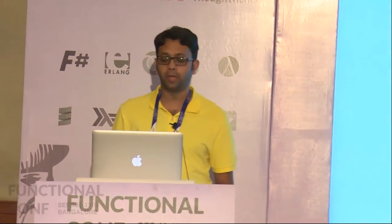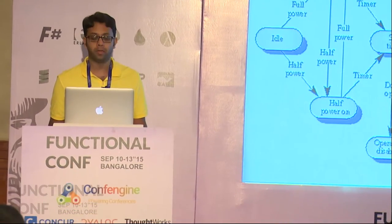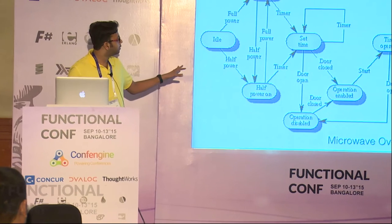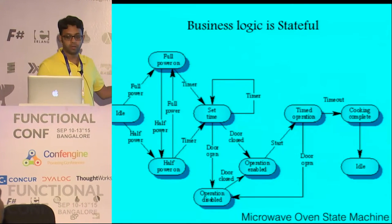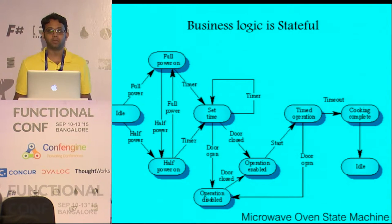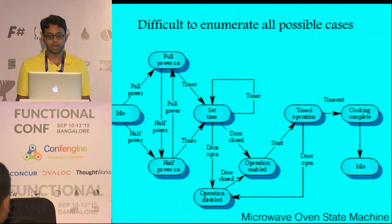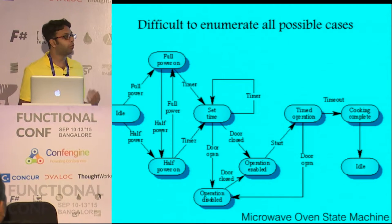So what is the problem? Testing real world stateful business logic is very hard. There are a lot of cases to worry about, there are a lot of combinations. Here is the microwave state machine diagram and as you can see there are a lot of transitions that can happen and it has inherent state built into it, which needs to be tested. Even if you have a functional programming language or any of that sort, you still need to test against a certain state, and it becomes difficult to eliminate all possible combinations.